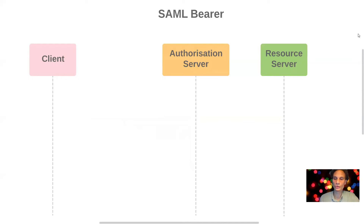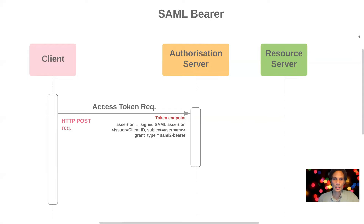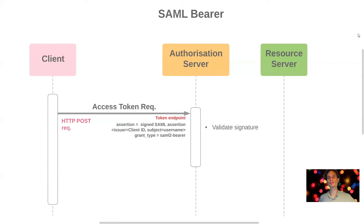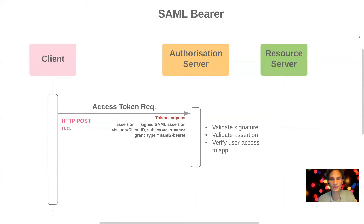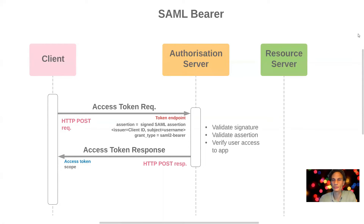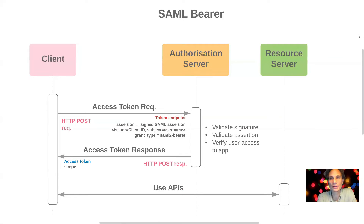Moving on to the SAML Assertion Bearer flow — the steps are very similar. The client starts with an access token request to the authorization server at the token endpoint via an outbound HTTP POST request. The assertion parameter is set to the signed SAML assertion and the grant type is set to SAML Bearer. The authorization server validates the signature in the payload, validates the assertion itself, and checks that the user has authorization for this client app. The access token is then returned to the client for use with the resource server APIs.